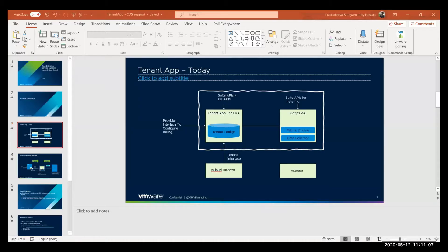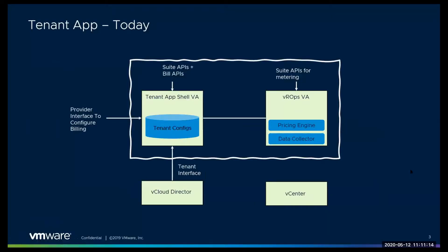Can you see my screen? Sure. So this is exactly what Jörg was talking about — what does TenantApp do? It provides two or three different kinds of interfaces for the service provider. The first interface is what you see on the left: you can log into TenantApp and configure the billing for your tenants. You can also configure access control — what are the things that the tenant has access to when they come via vCloud Director. The bottom arrow is the tenant interface, where a tenant can log in via vCloud Director and see information such as what infrastructure they're using, what is their capacity, what are their metrics, and so on.